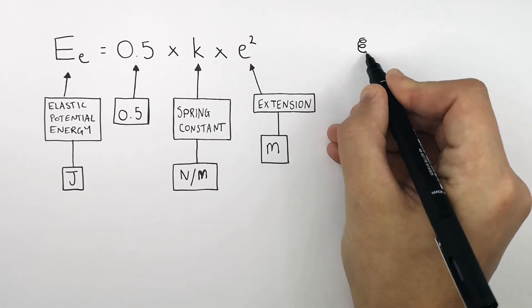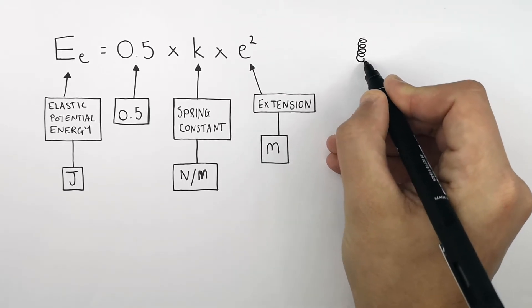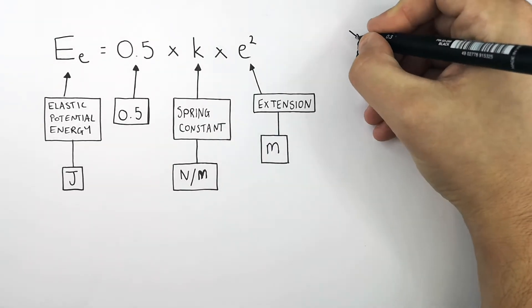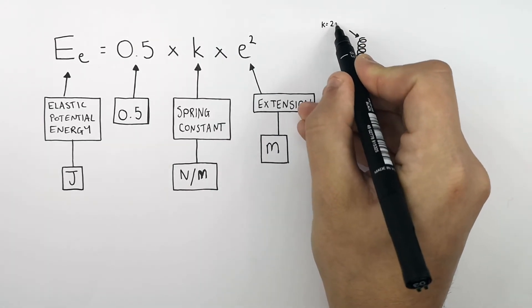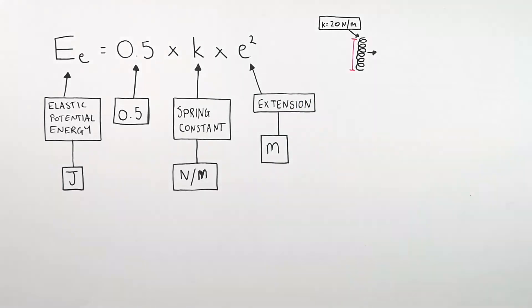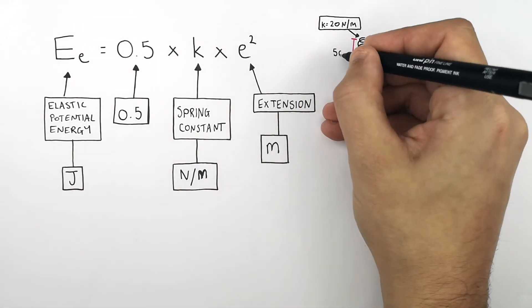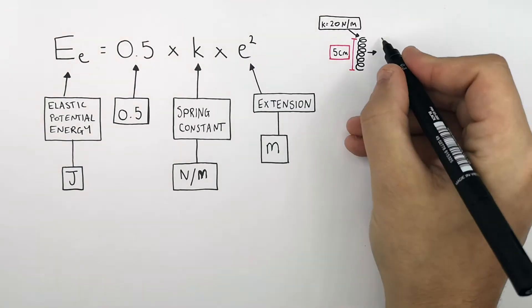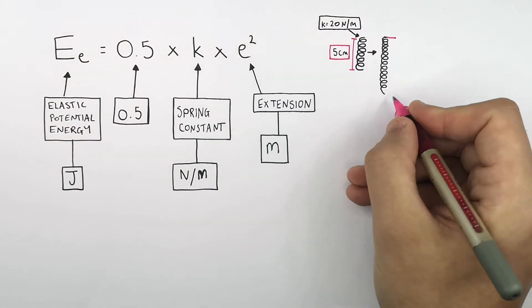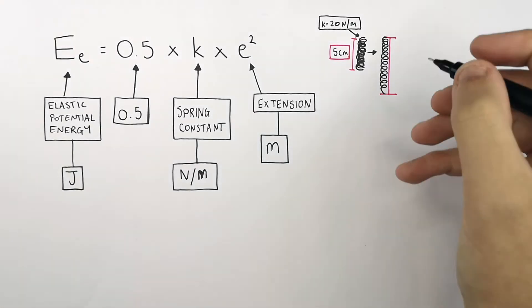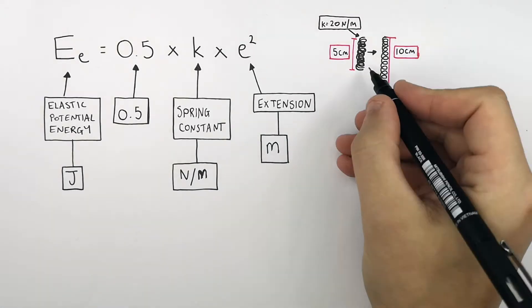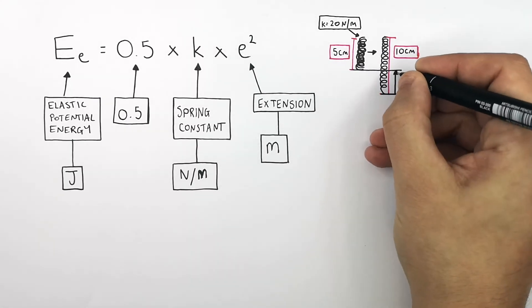This is an unstretched spring with no energy in its elastic potential energy store. The spring constant k for this spring is 20 newtons per metre, and the unstretched spring is 5 centimetres in length. The spring is stretched to a final length of 10 centimetres. But we don't want to use the 10 centimetres — we need to figure out the extension of the spring for E.